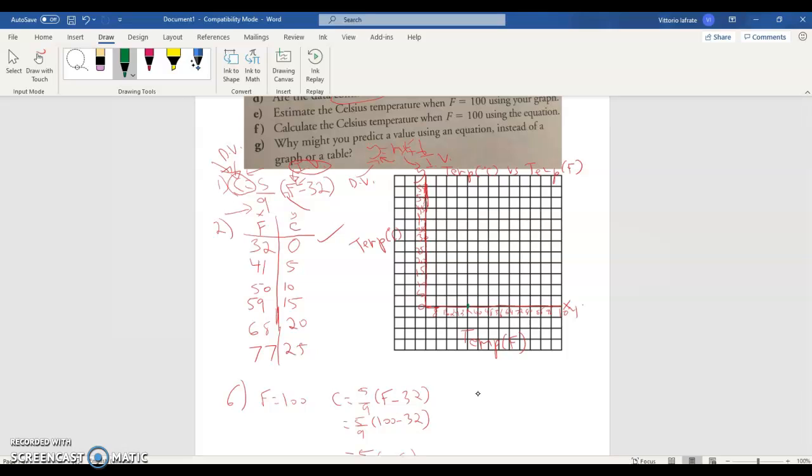And then we have 41 and 5. So here's 40, 48's there, 44's in the middle, 41 will be just a little bit above, to the right of 40. So about there. And then we have 50, we're at 10. So here's 48, here's 56, so 52 would be there. 50 would be just a little bit beyond the 48, about here. And you'd be more specific with your pencil, of course. It's easier than doing this in the computer.